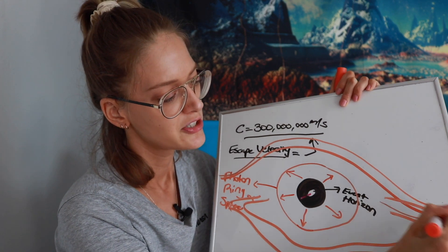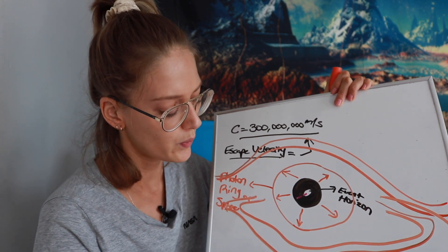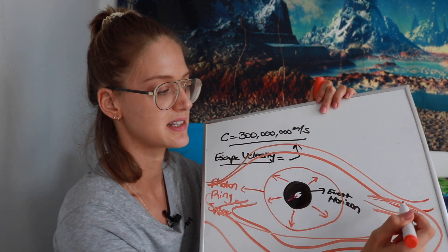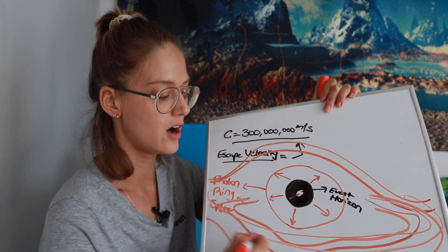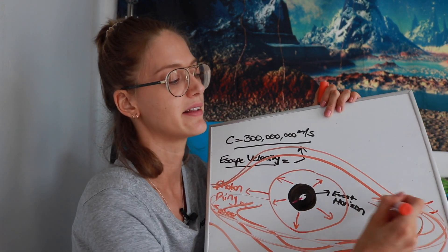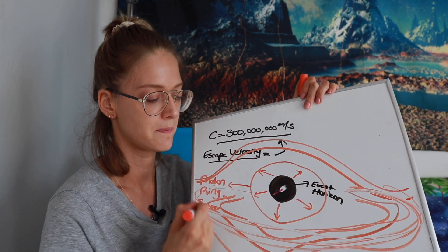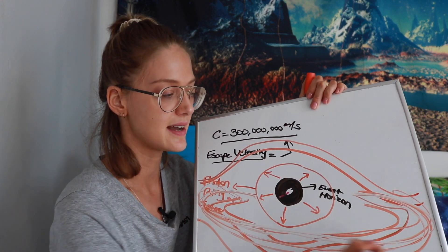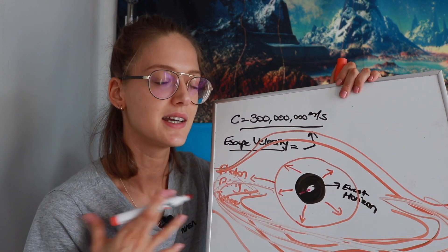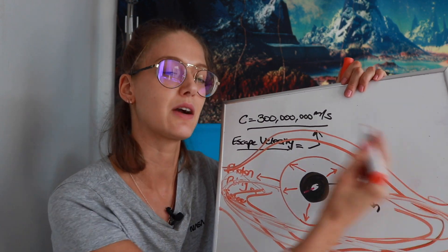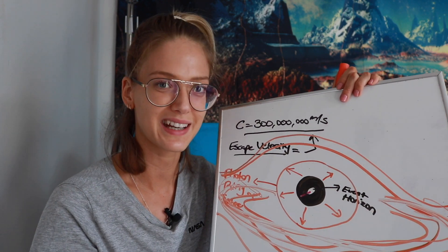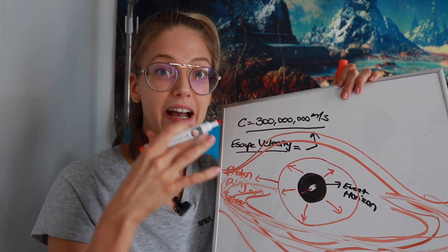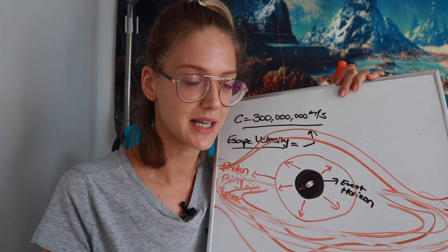Going further out, you start to see this curve up here and it sort of goes out and around, bending inward. This entire area is the accretion disk — all this glowing matter around it. The matter and dust and gas in the accretion disk is moving differently depending on where it's located, and this is where gravitational lensing comes in.